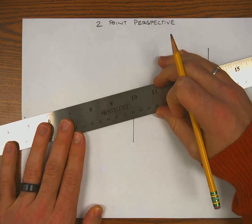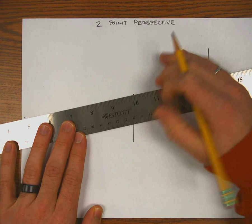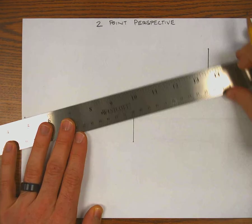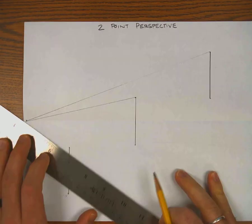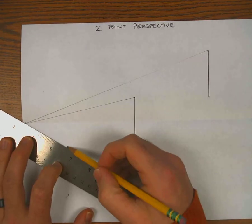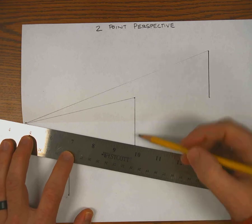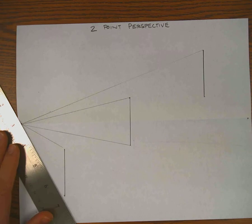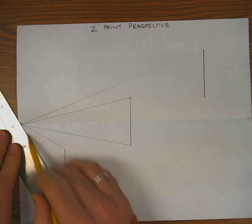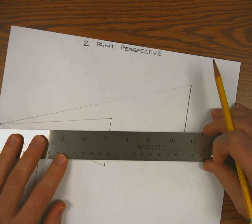So all I have to do now is draw a line from the top of each of those vertical lines to both vanishing points. So I will do all the lines that go to the left vanishing point first.